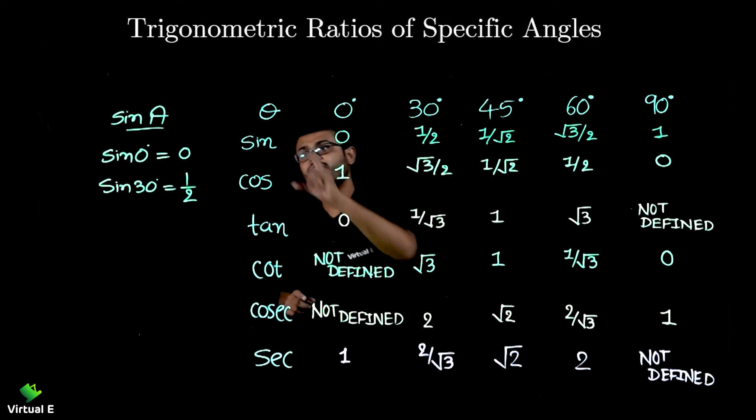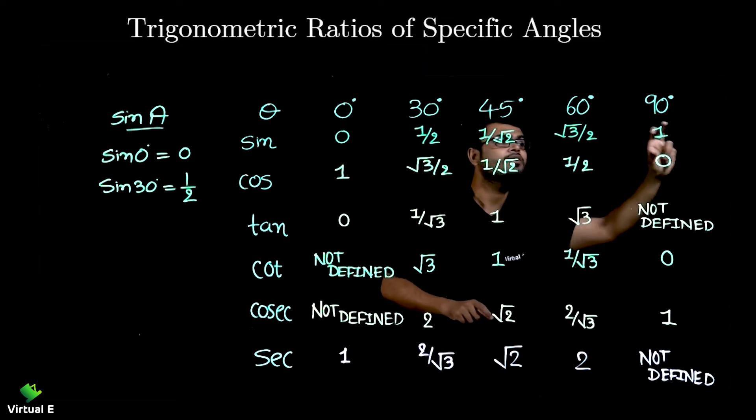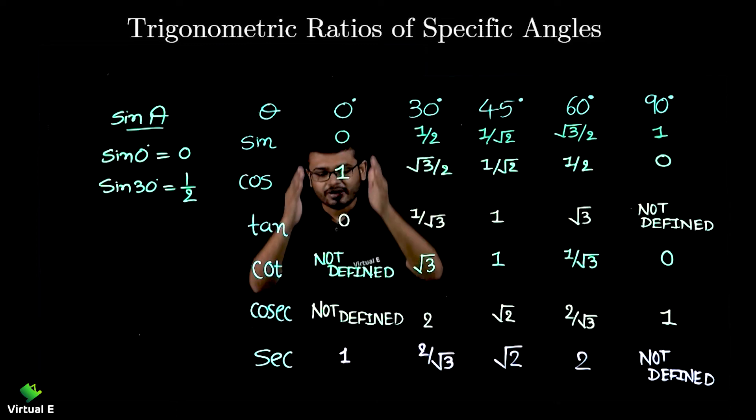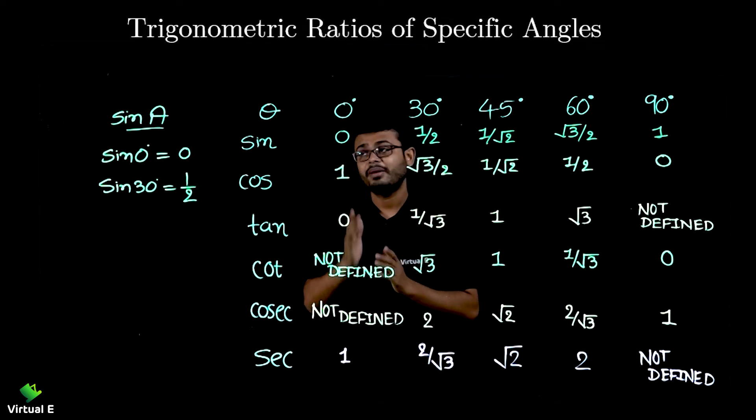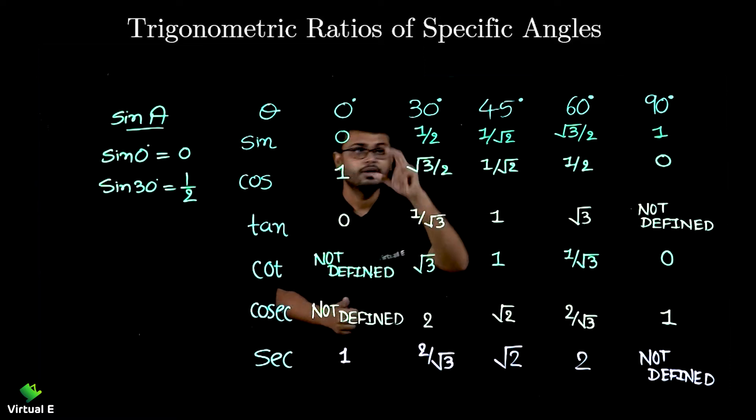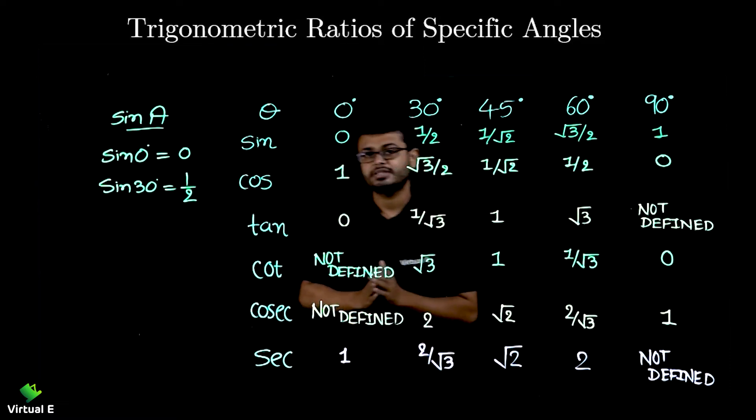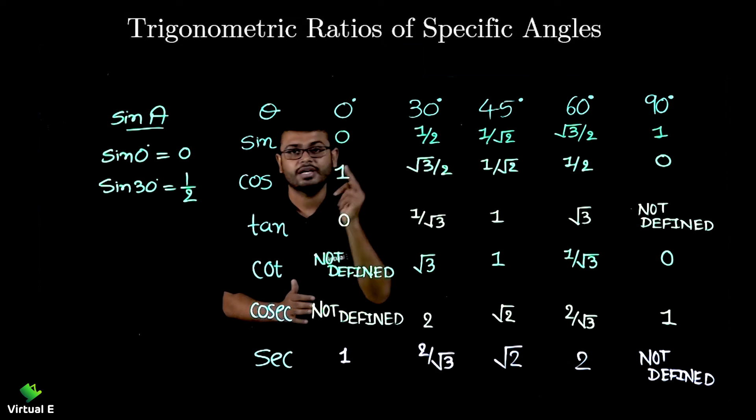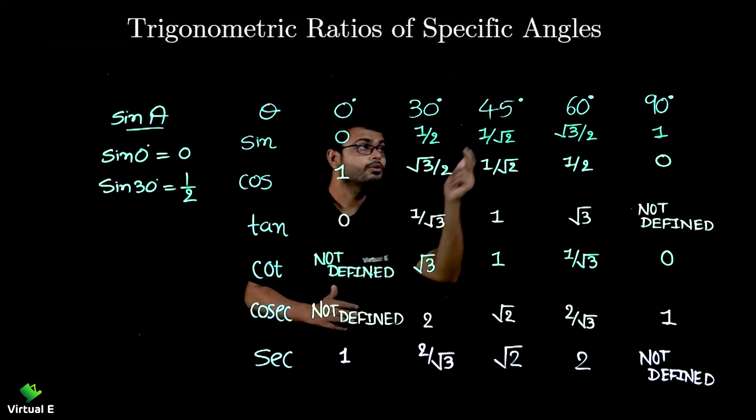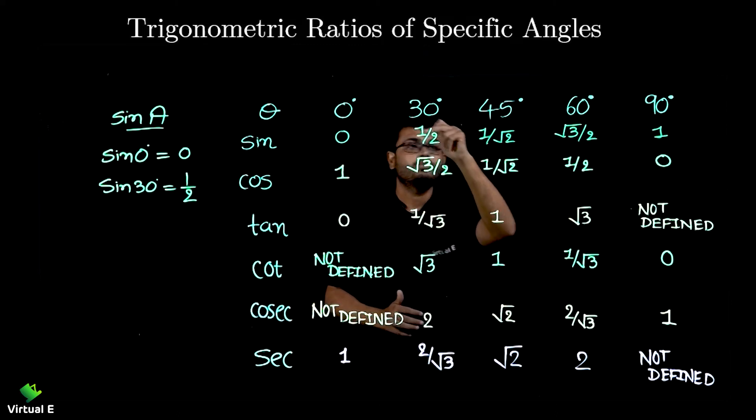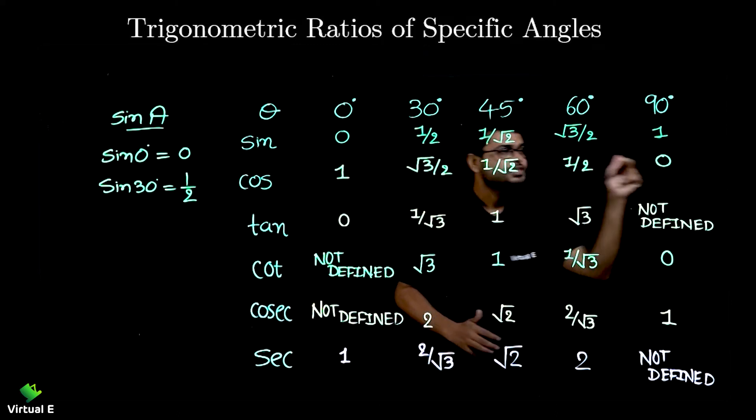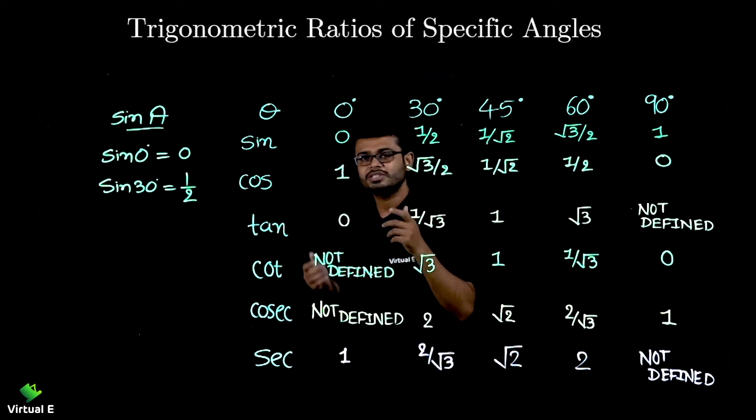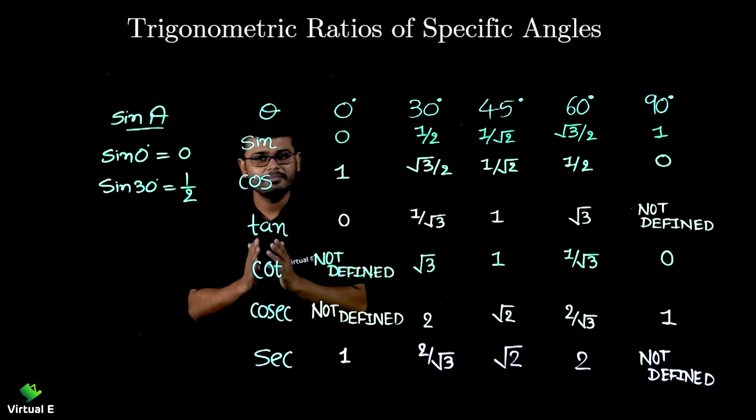You need to remember, if you only remember the value of sine, you can write rest of the values. Remember first of all sine 0 is 0, done. To write the value of cos, what you need to do? You need to start from the last point 1 here, then root 3 by 2, 45 as it is 1 by root 2, then 1 by 2, and 0. So value of cos is done.